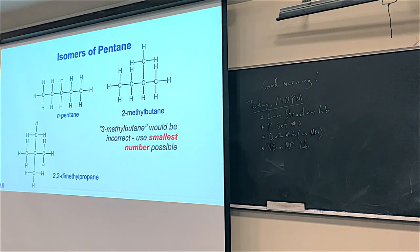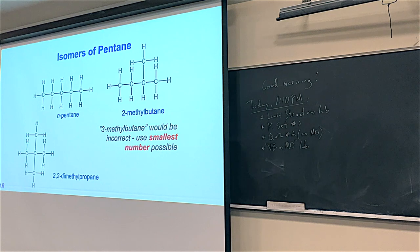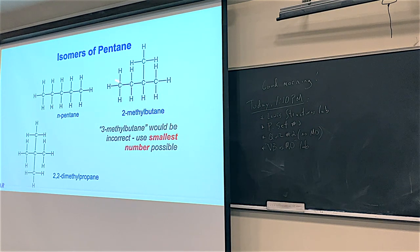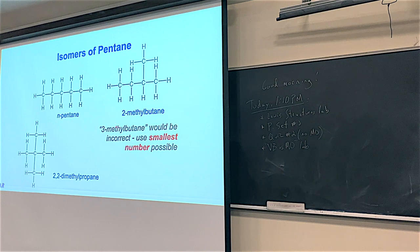As alkanes get bigger, you have more and more isomers. Pentane is a five-carbon system — it's a pentyl group with a hydrogen on the end. The n-version is just all the carbons in a row with a hydrogen on the end. But you could take this CH3 and move it to one of the inside carbons. So this compound right here is 2-methylbutane.